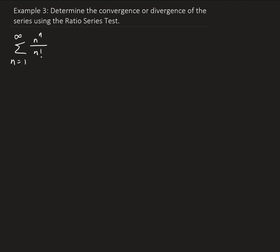If the test is inconclusive, we would have to use another test. So let's first identify the nth term, and then from there we can get the (n+1)th term. The nth term is going to be n to the n over n factorial.